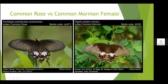This should be form Stichius. This is the Common Rose — another unpalatable butterfly — and this is the Common Mormon female form Stichius which mimics the Common Rose. They behave similarly — the flight pattern is the same, flying leisurely.